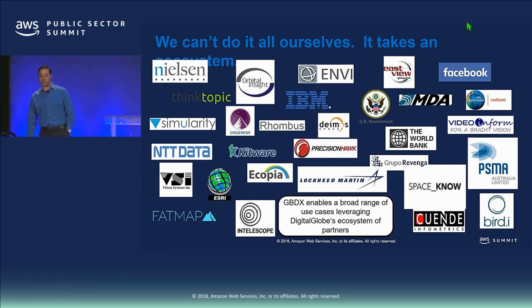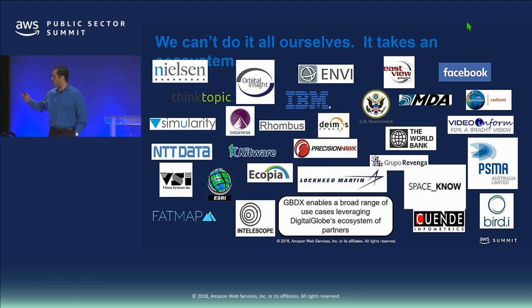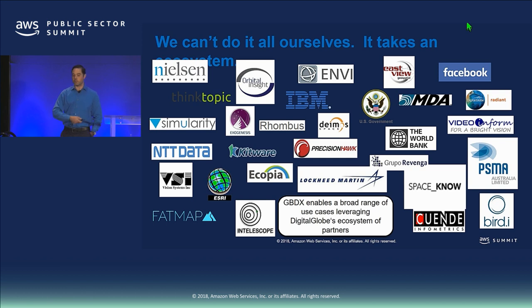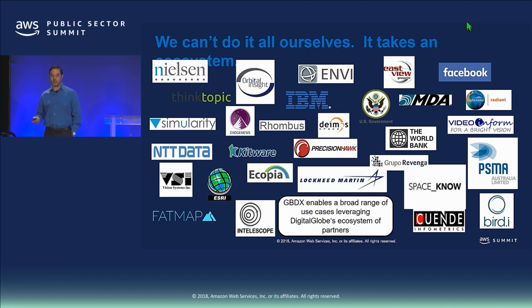We can't do it all ourselves — it takes an ecosystem of partners. So we've built the GBDX platform as a place where that ecosystem can come together. Some partners are algorithm producers who bring their algorithms to GBDX and plug them in. Others are algorithm consumers who run algorithms at scale against our imagery to extract the information they need. Our goal is really to advance the state of the art of AI on satellite imagery.